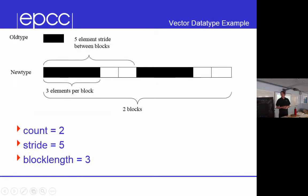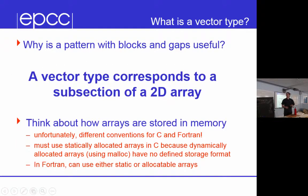Why is the block-gap pattern useful? A vector type corresponds to a subsection of a 2D array — that's why they're useful. If you take a 2D subsection of a 2D array, then in memory — as long as you define your array sensibly — that subsection is exactly a vector: a block-gap pattern.